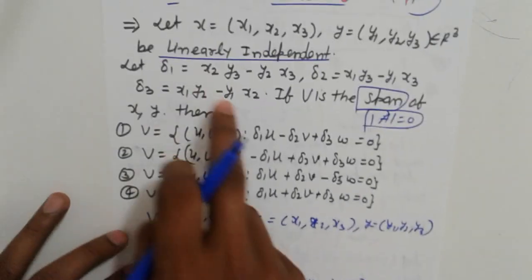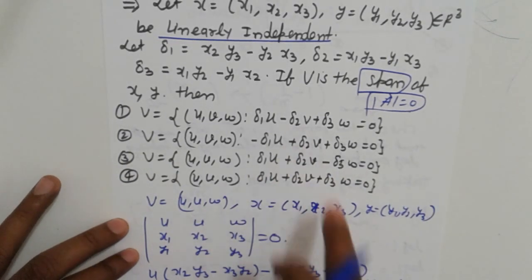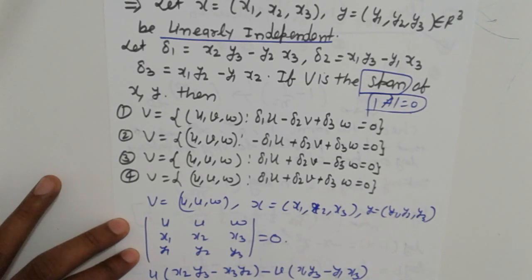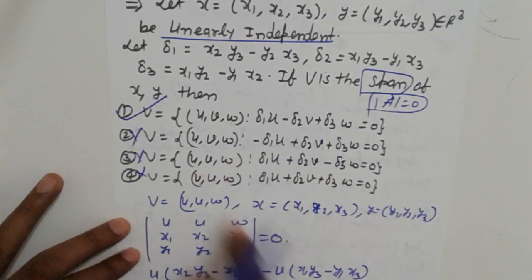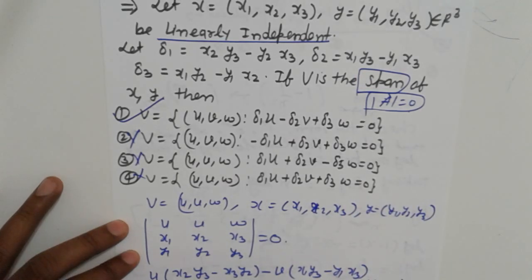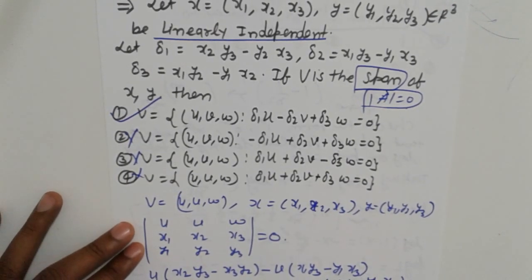This gives us U·Δ1 minus V·Δ2 plus W·Δ3 equals zero, where Δ1, Δ2, Δ3 are the corresponding sub-determinants. Checking the options, the first option is correct and all others are wrong. Remember: when three vectors are given and they are linearly dependent, use the determinant equals zero rule to find the spanning relation. Thank you.